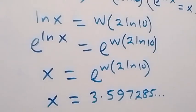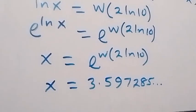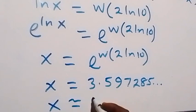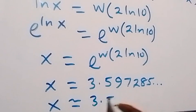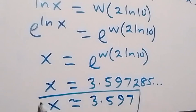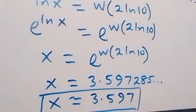From here, we approximate it to 3 decimal places, and this gives us 3.597285, approximately. So the value of x here is x approximately equals to 3.597.